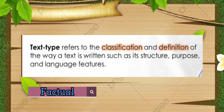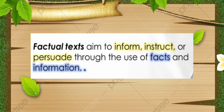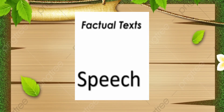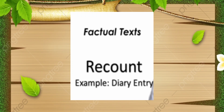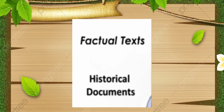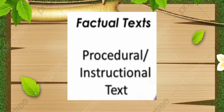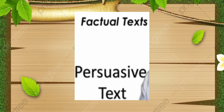Text types are categorized as factual and literary. Factual texts aim to inform, instruct, or persuade through the use of facts and information. Examples of factual texts include news reports, speech, recount — such as a diary entry — historical documents, procedural or instructional texts that teach readers how to make something, and persuasive texts, which are non-fiction writing used to convince the reader to agree with the author about an issue.